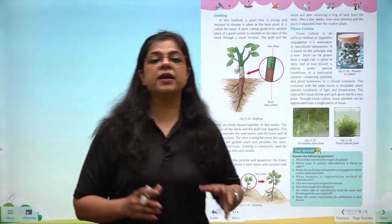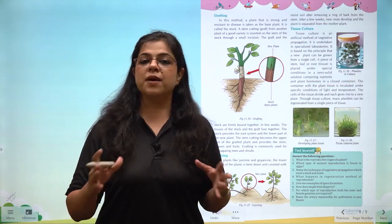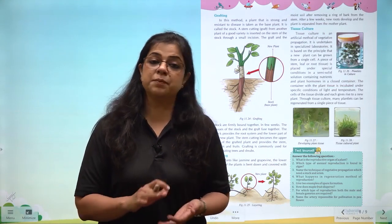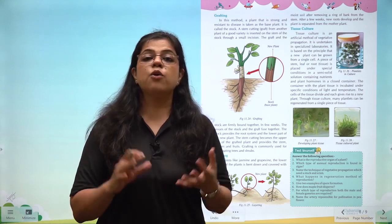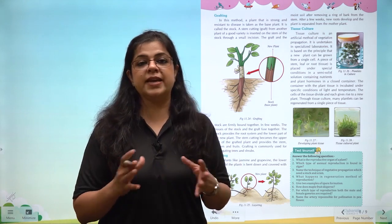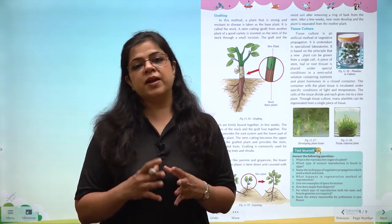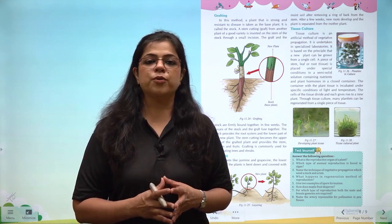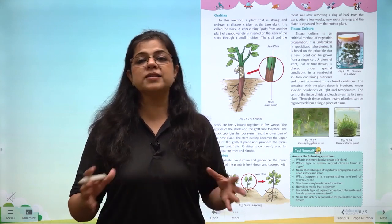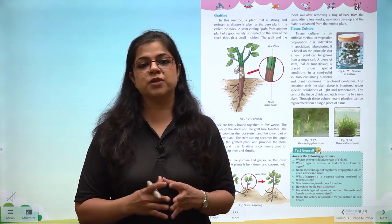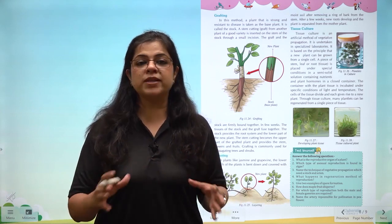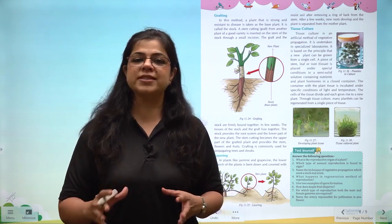In this chapter on reproduction in plants, we have learned about sexual and asexual reproduction in plants, how the flower acts as a reproductive organ, and how the ovary contains the newly developing plant in the form of a fruit and seed. We have also learned the various methods by which seeds are dispersed and the various methods by which vegetative propagation takes place.